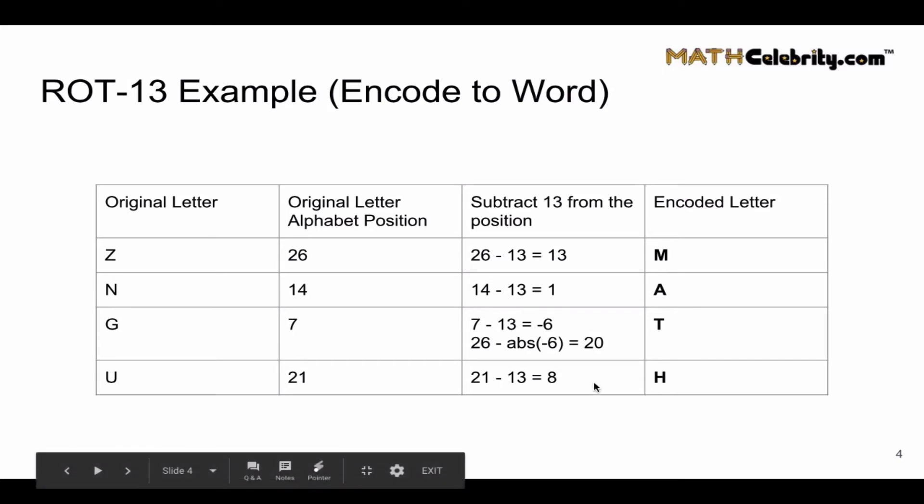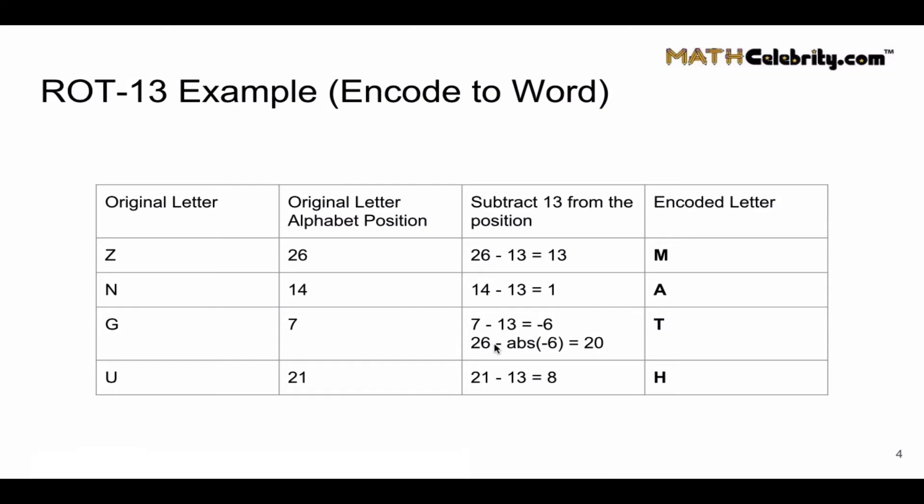So our rule is take 26 minus the absolute value of that position. Well, the absolute value of any number is positive, so 26 minus 6 is 20. And whatever numbers you get in this column, you take the alphabet position for that letter.